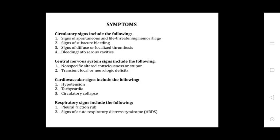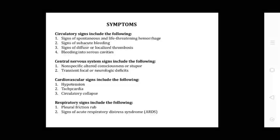Circulatory signs include signs of spontaneous life-threatening hemorrhage, signs of subcutaneous bleeding, signs of diffuse or localized thrombosis, and bleeding into serous cavities. Central nervous system signs include nonspecific altered consciousness or stupor, transient focal neurological deficits. Cardiovascular signs include hypotension, tachycardia, and circulatory collapse. Respiratory signs include pleural friction rub and signs of acute respiratory distress syndrome ARDS.